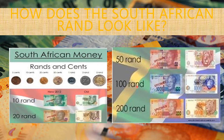The 100 Rand note is blue in colour. It has Nelson Mandela and the number 100 on it. There is a buffalo right at the back. This is the old note, but the new one also has the buffalo at the back.